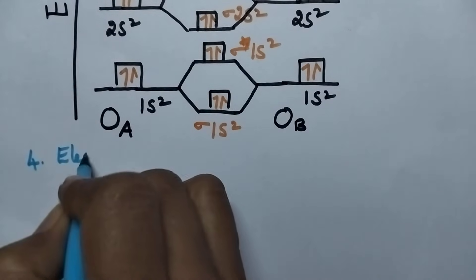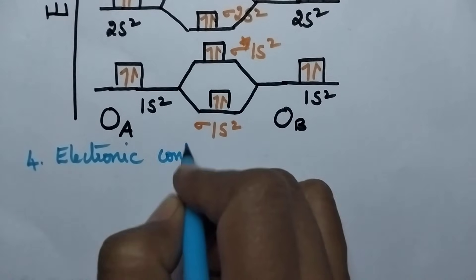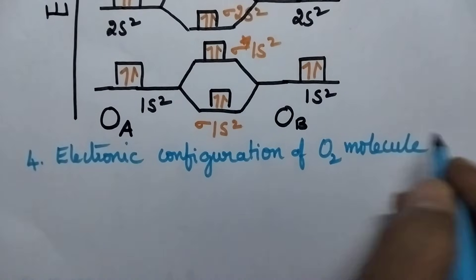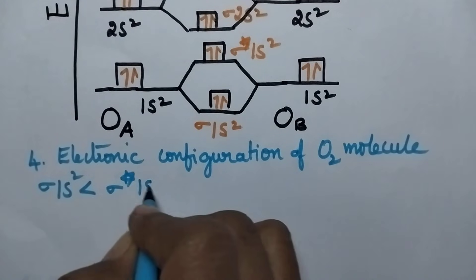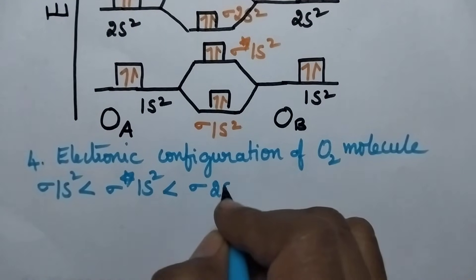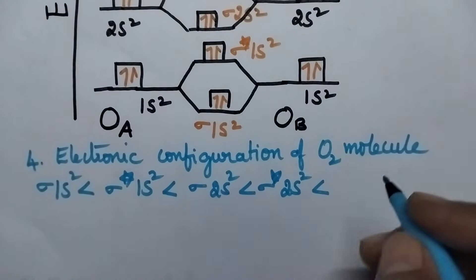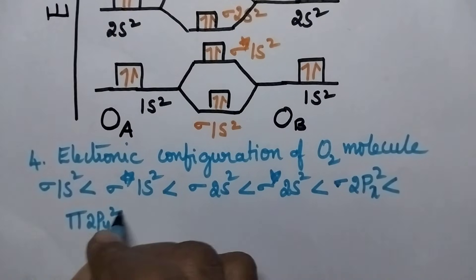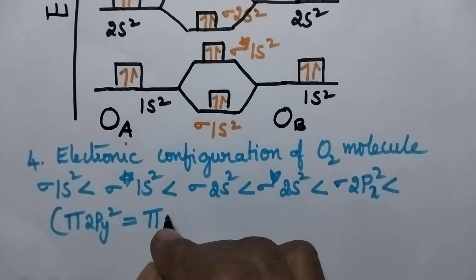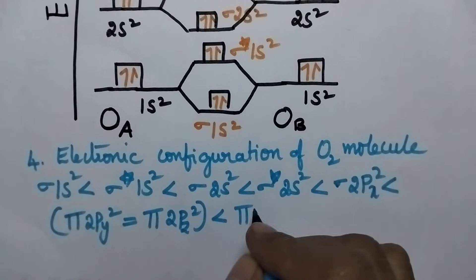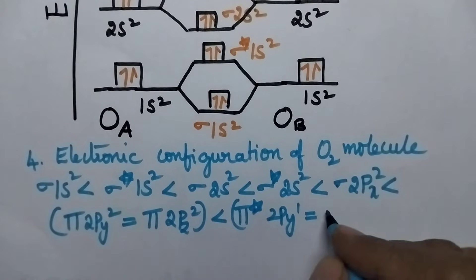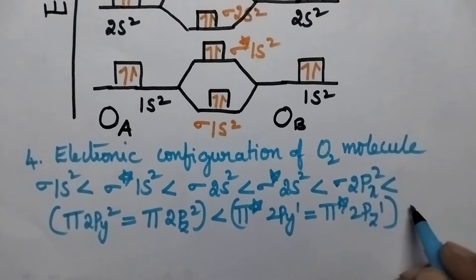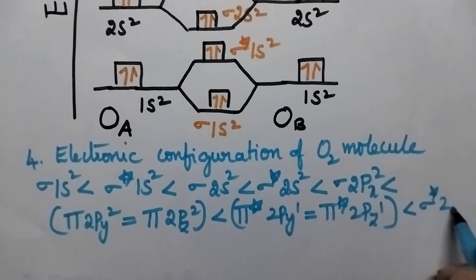The electronic configuration of the O2 molecule is: σ1s² < σ*1s² < σ2s² < σ*2s² < σ2px² < π2py² = π2pz² < π*2py¹ = π*2pz¹, and all of these have less energy than σ*2px which is empty.